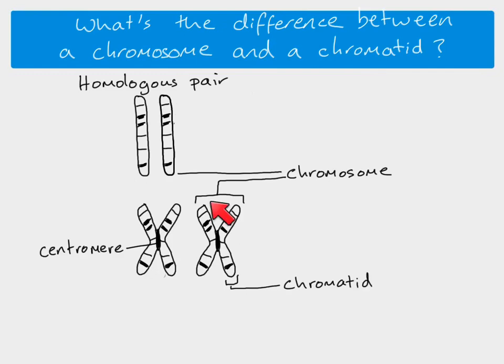So this chromosome has got one chromatid here and another chromatid here, joined by the centromere. Chromatids on the same chromosome are called sister chromatids. Chromatids on different chromosomes in the same pair — for example this chromatid and this chromatid — are called non-sister chromatids.